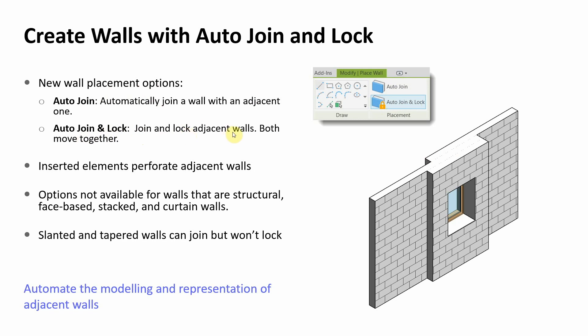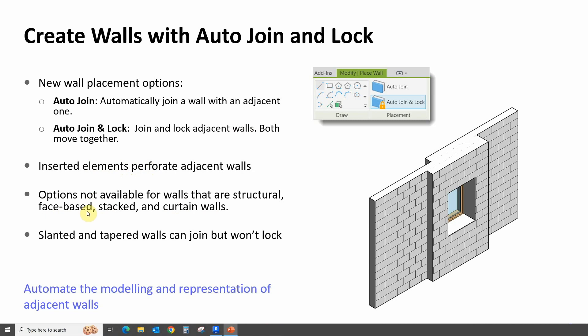'Join and lock' joins and locks adjacent walls to one another. Inserted elements such as doors and windows will perforate both walls. This option is not available for walls that are structural, face-based, stacked, or curtain walls. Face-based refers to walls derived from a massing surface. It is also available for slanted and tapered walls, but they do not lock as well. Let's see how these things work.